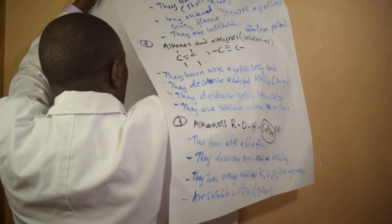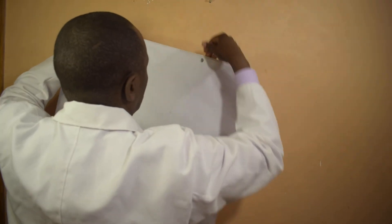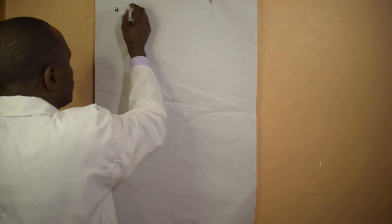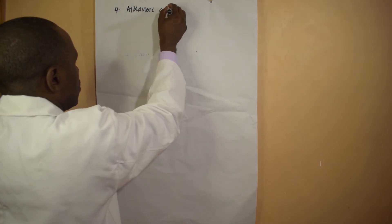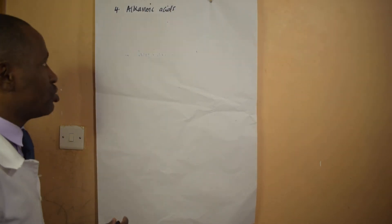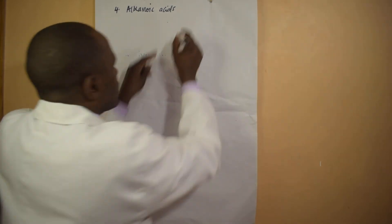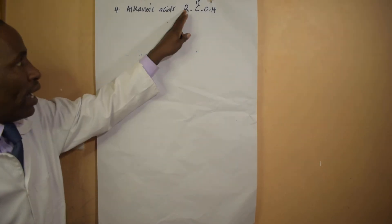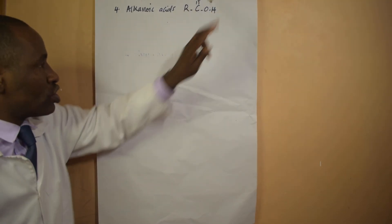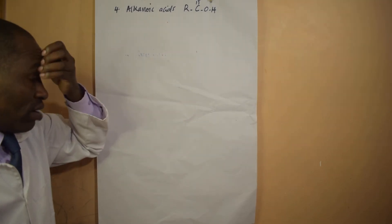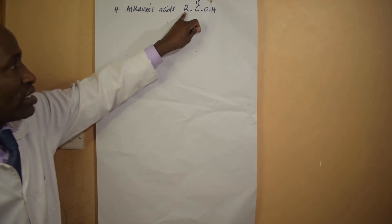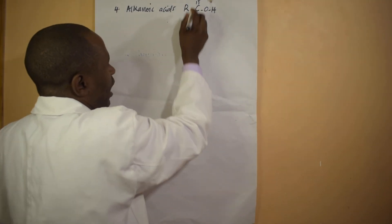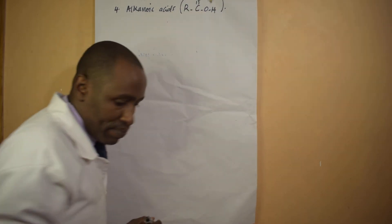Now let's get to the fourth homologous series — the alkanoic acids. Alkanoic acids are represented by RCOOH, where R is CnH(2n+1). The functional group is the carboxyl group: C double-bonded to O, with an OH attached.